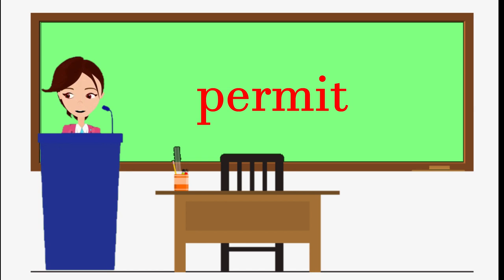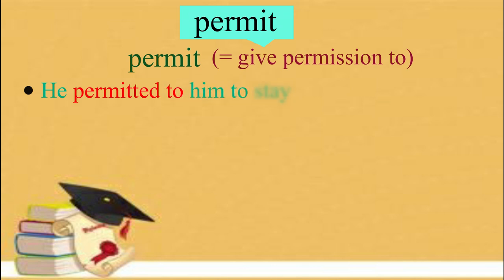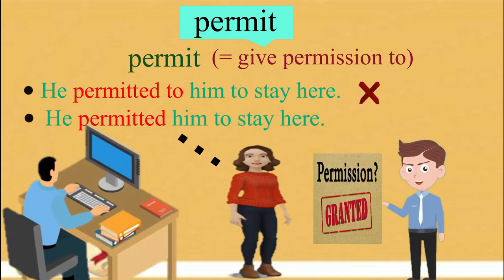Permit means to give permission to. Sometimes, we hear people use it like this. There is no need of adding to after permit. It is not correct. Repeat the correct sentence after me: He permitted him to stay here.